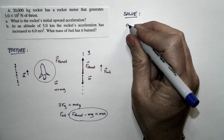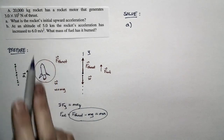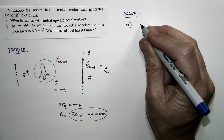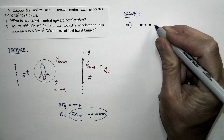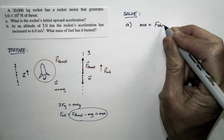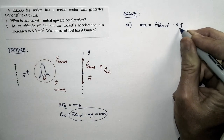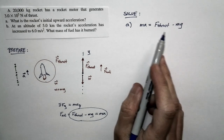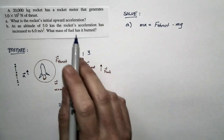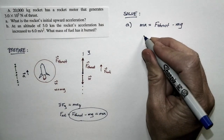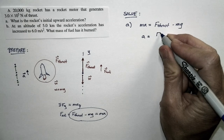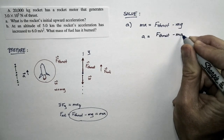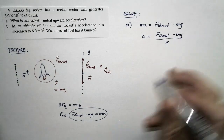There are two phases to consider. First, we're interested in the rocket's initial upward acceleration. Taking our working equation and rewriting it: M times A equals F_thrust minus M times G. Solving for acceleration by dividing both sides by M, we get: acceleration equals F_thrust minus M times G, all divided by the mass of the rocket.